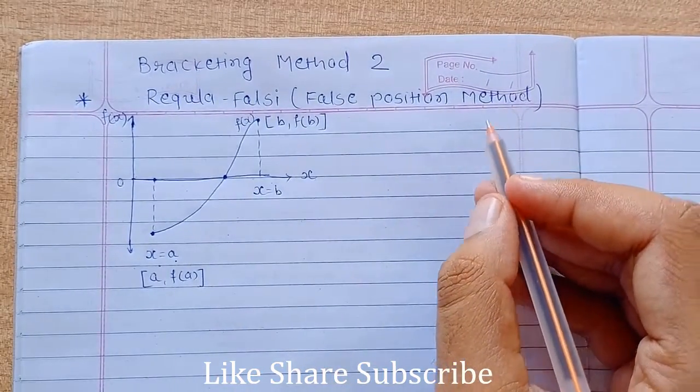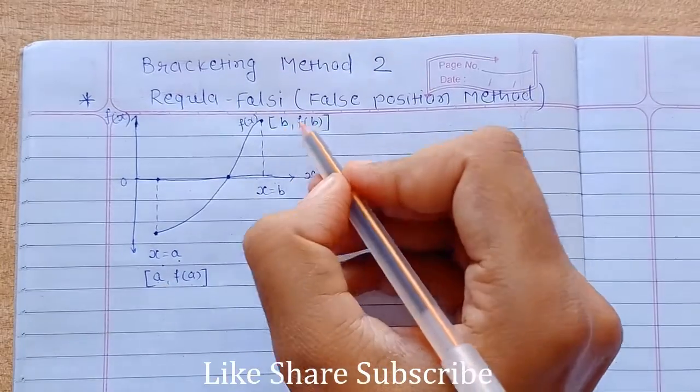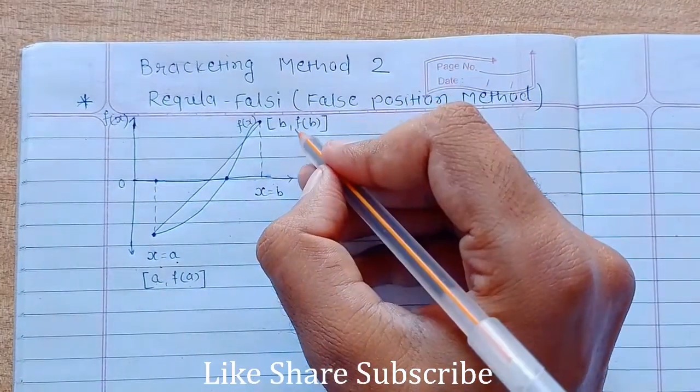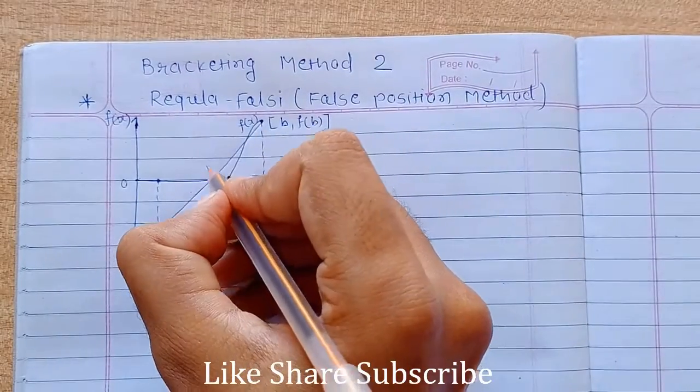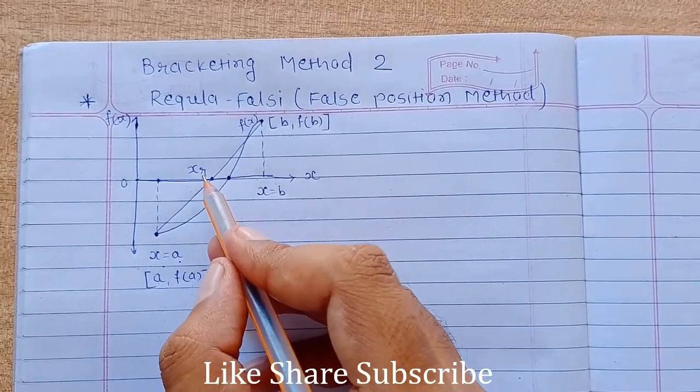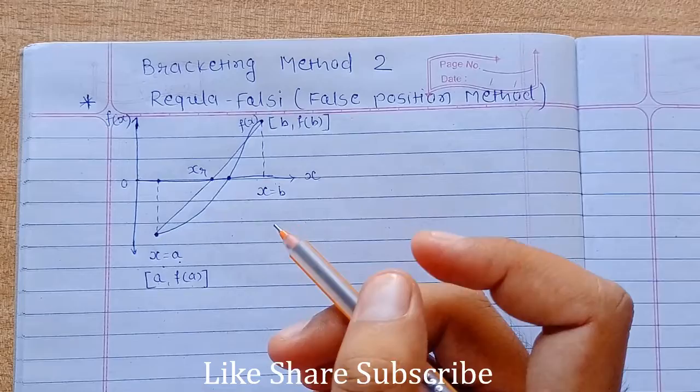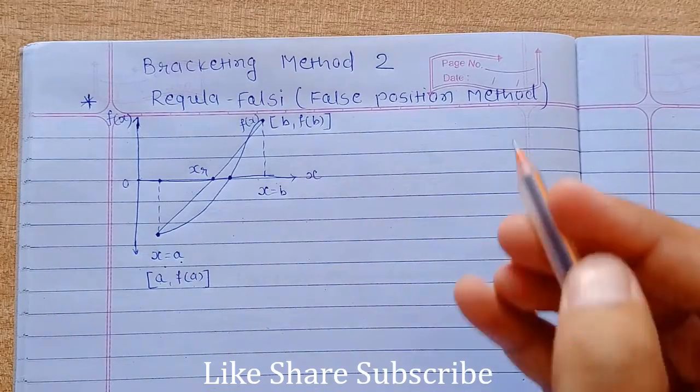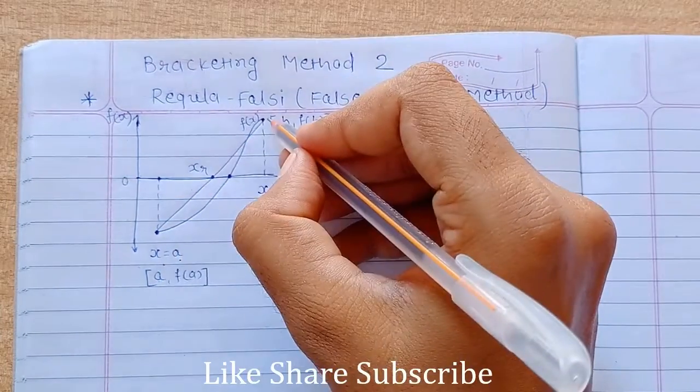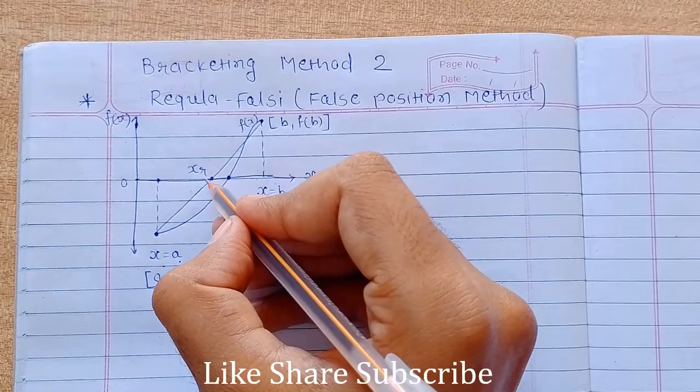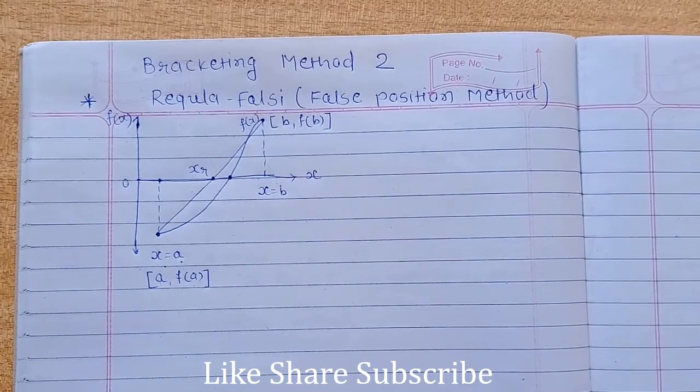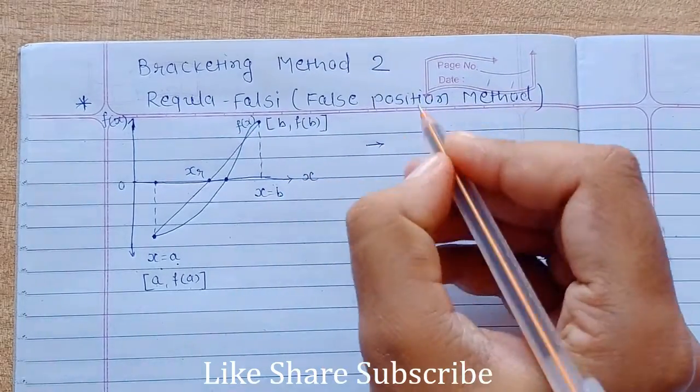Now what this method suggests: when you connect these two points a, f of a and b, f of b, the intersection of this straight line with the x-axis will give you the new approximation for the root, or a false root also known as xr, false root. So ultimately what we are doing here, we are replacing this curve with a straight line and find out its intersection with the x-axis. That will be our new approximation.